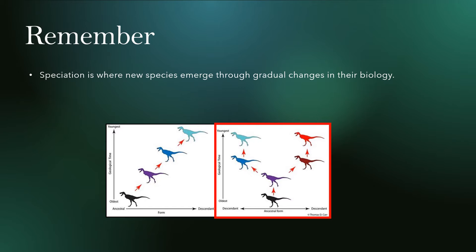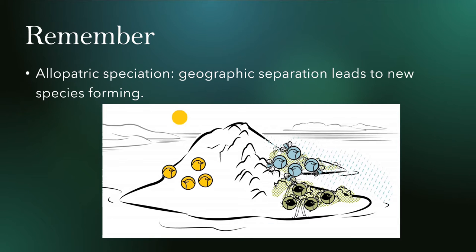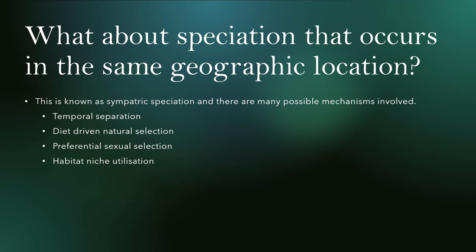Thinking back to earlier in the module, you will have learned about allopatric speciation, where geographic separation — such as a mountain, a bay, or climatic differences — results in the formation of new species. Now we're going to look at sympatric speciation, which occurs in the same geographic area, where multiple populations of the same species existing in the same space are placed under different evolutionary pressures, resulting in them becoming different species whilst still being physically able to interact.